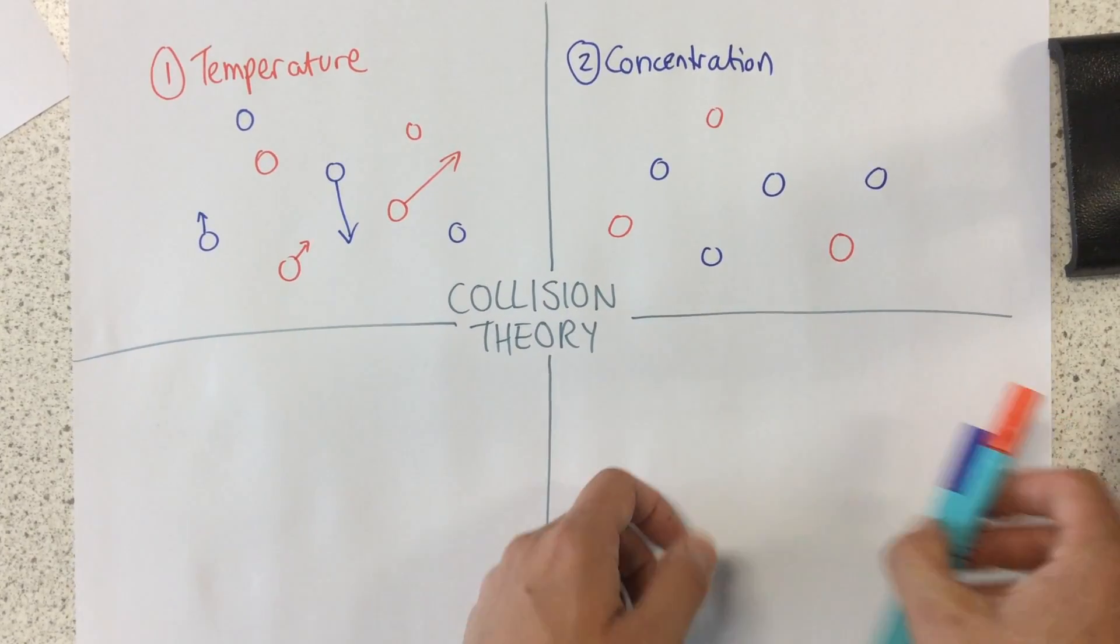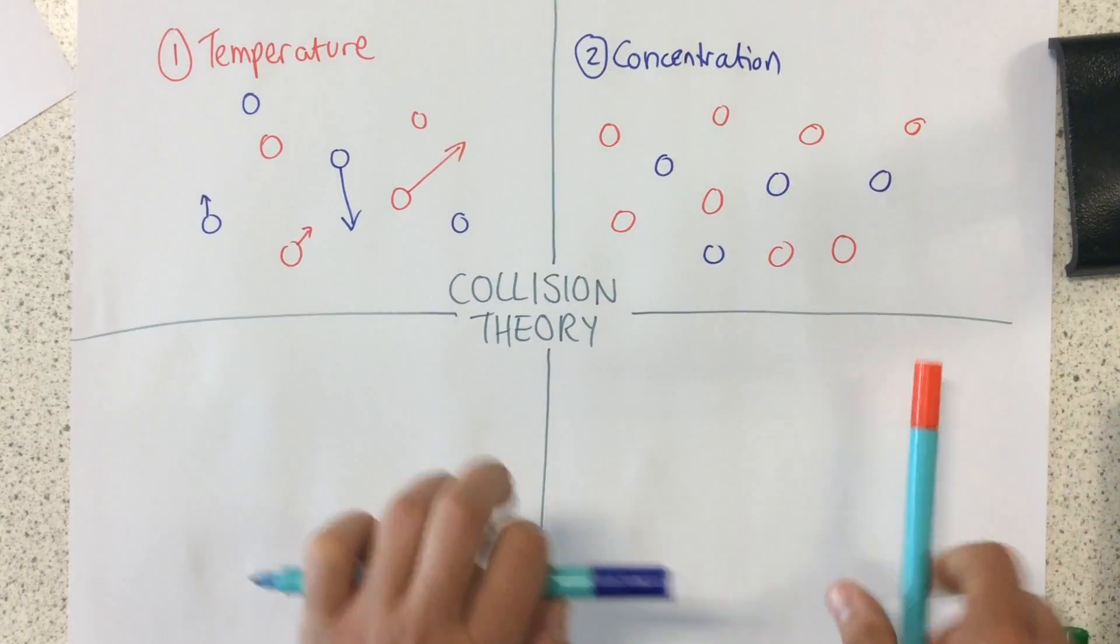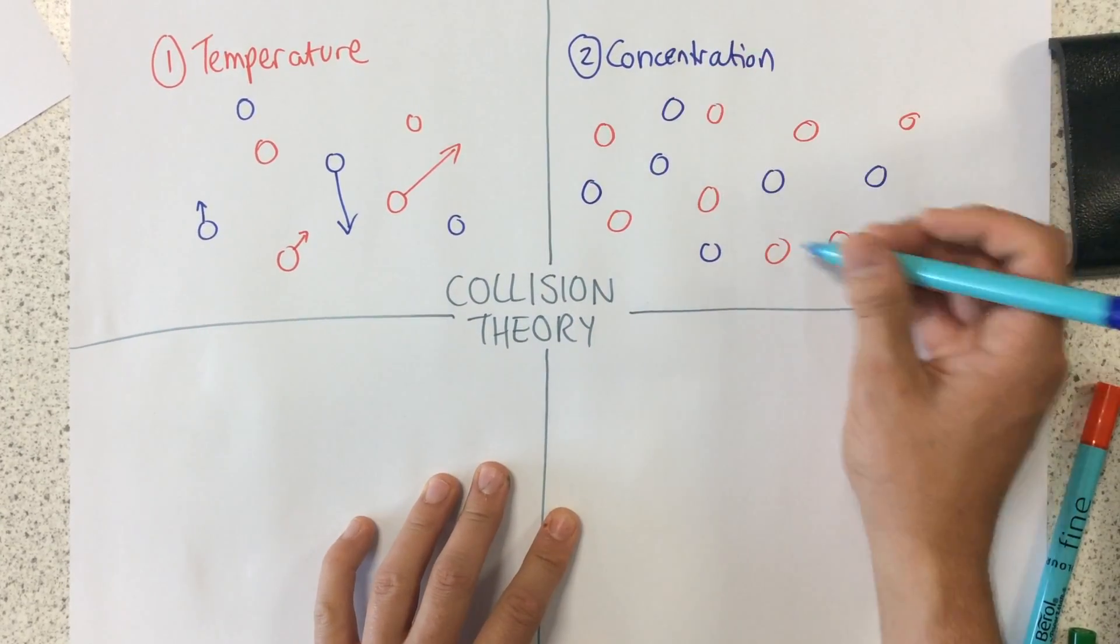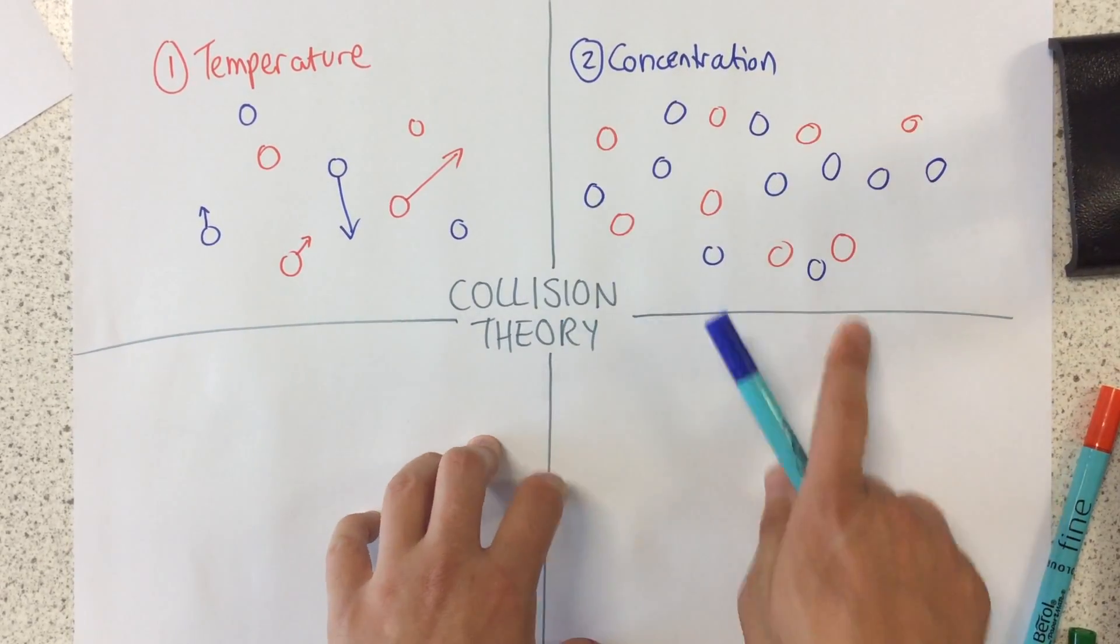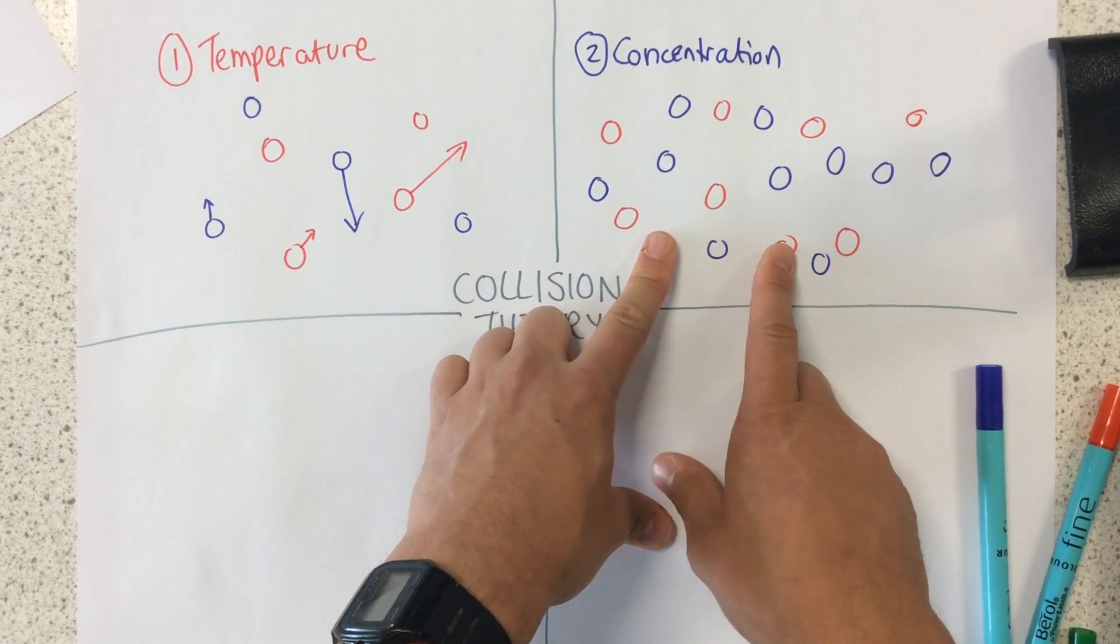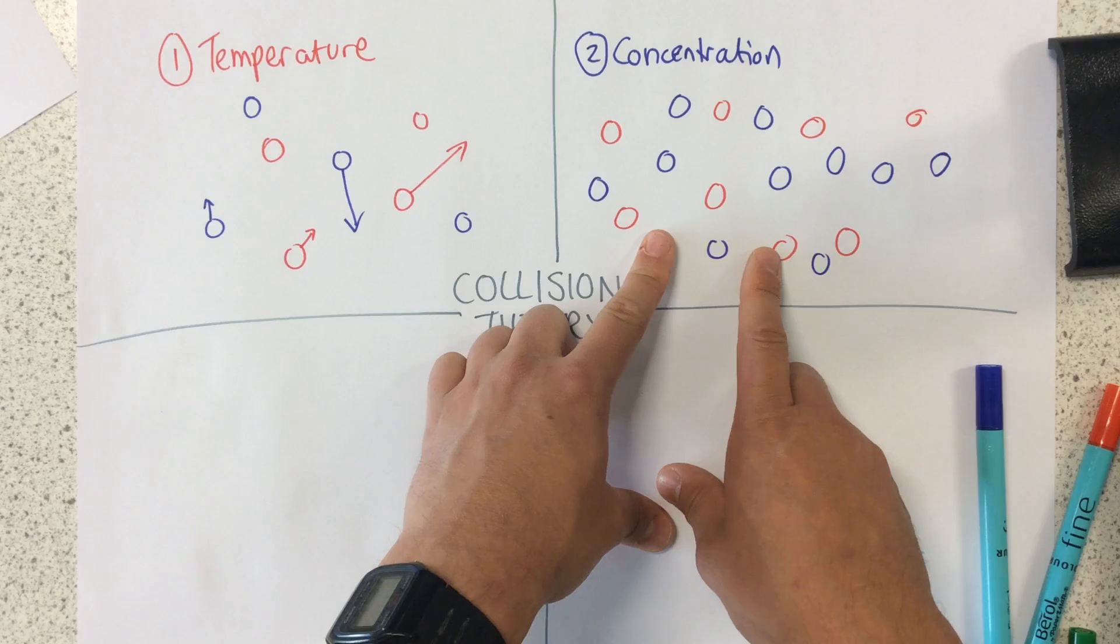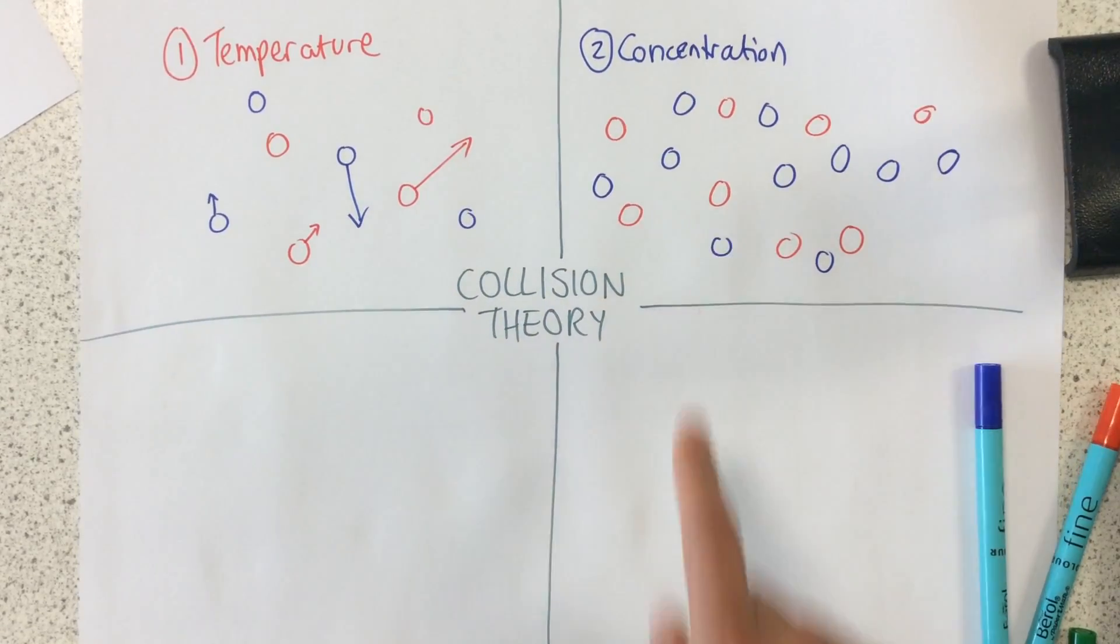If we increase the concentration, so let's say we've got loads more of these particles now, we can see because there's more of the particles, there's going to be more frequent collisions. Therefore, we're going to have a faster rate of reaction. So the higher the concentration, the greater the rate of reaction.